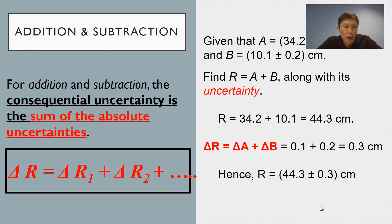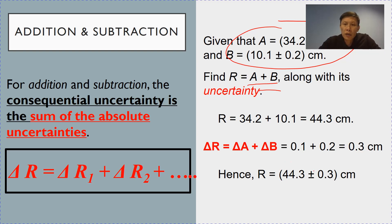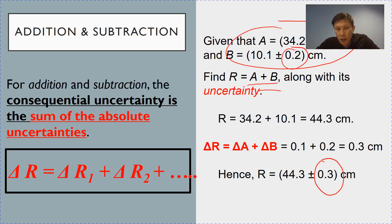For expressions involving addition and subtraction, the final consequential uncertainty is simply the addition of all the absolute uncertainties of the quantities. For example, if A and B are given by these values and you are asked to sum up A plus B, the uncertainty of the result is found by adding up the absolute uncertainty of each quantity. A has absolute uncertainty 0.1, B has 0.2, so the uncertainty of A plus B would be 0.1 plus 0.2, which is 0.3.